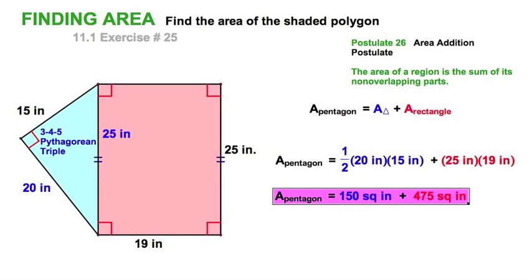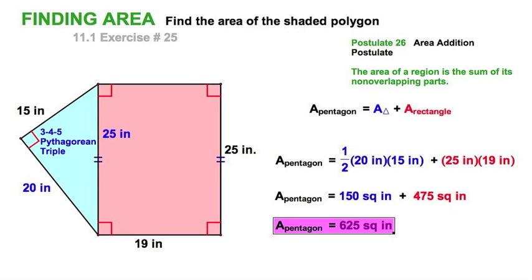And we'll just do a little bit of simplification there, or evaluation. And the blue contributes 150 square inches, 475 from the red. And we'll just, at this point, add it all up. The entire figure has an area of 625 square inches.